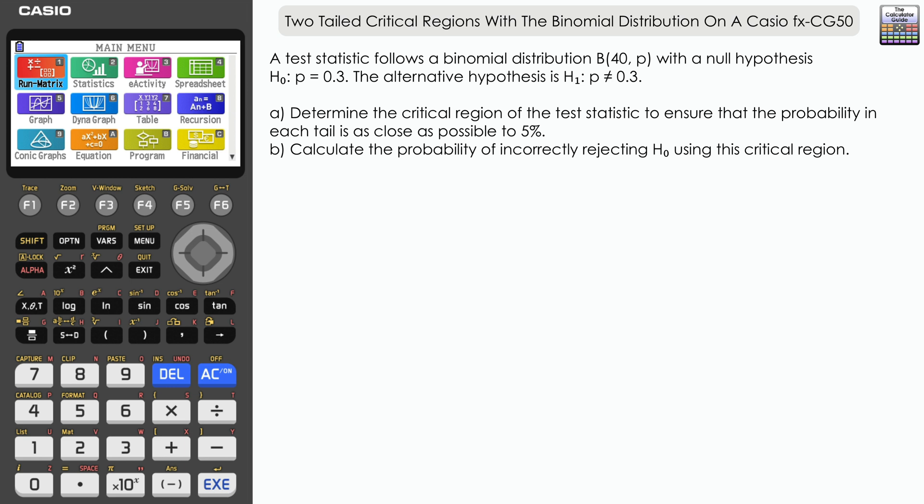That 'does not equal' means we have a two-tail test. We have to test the lower tail and the upper tail, so we need to find critical regions for both tails.